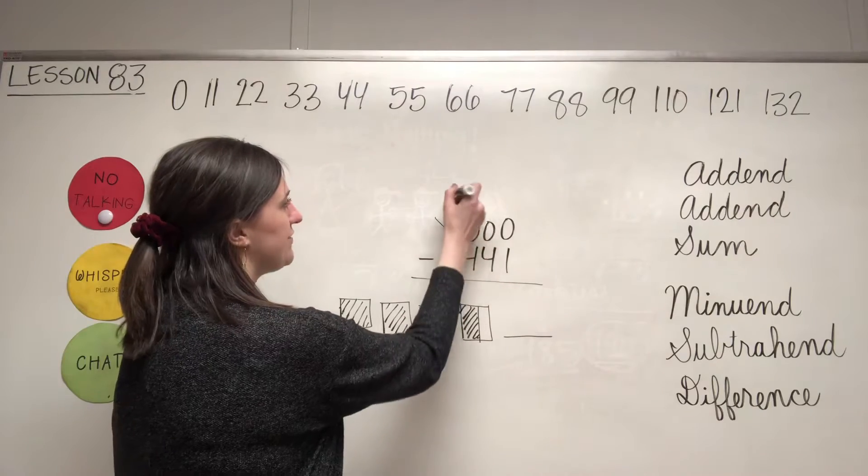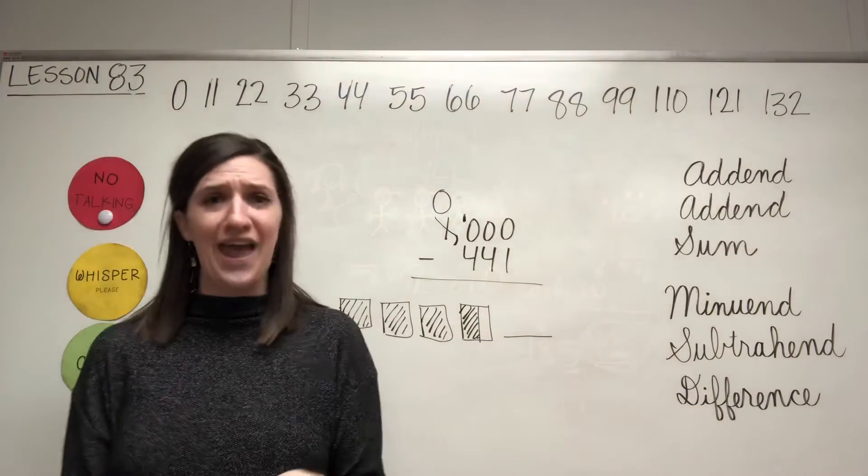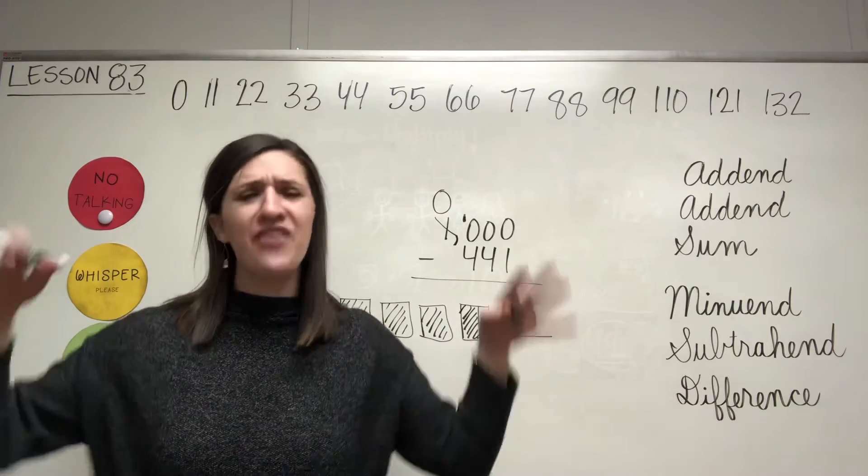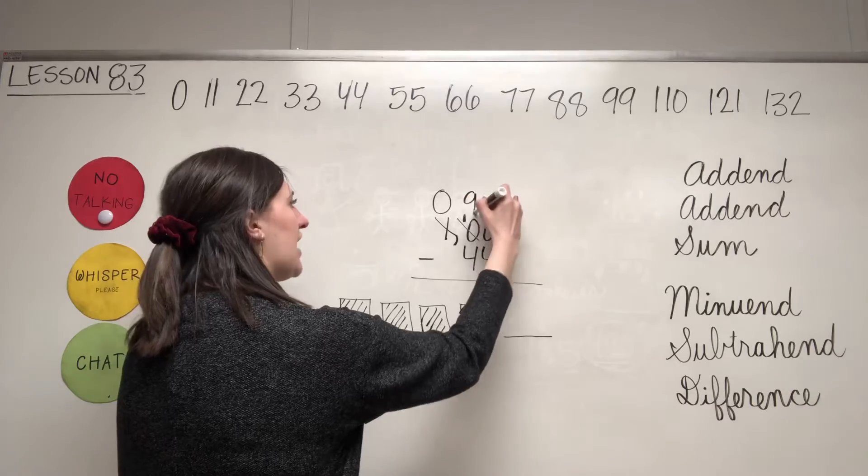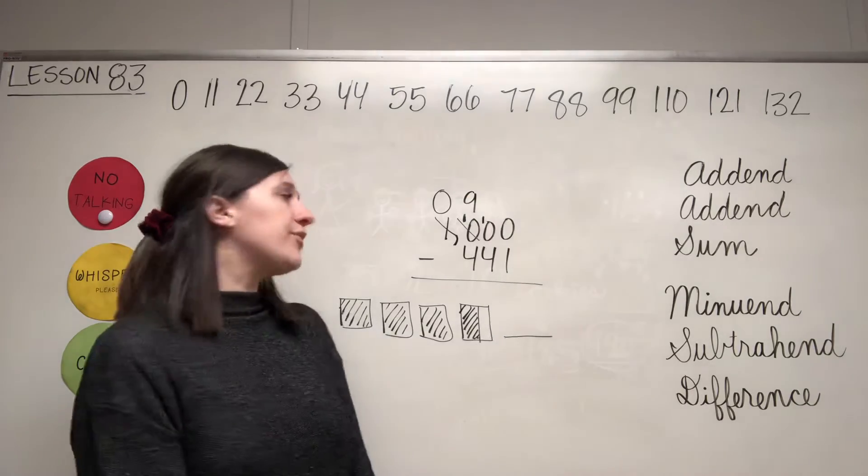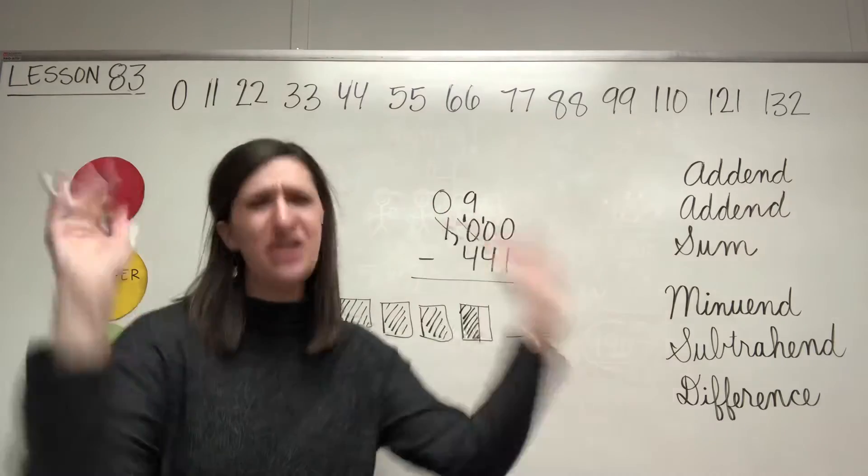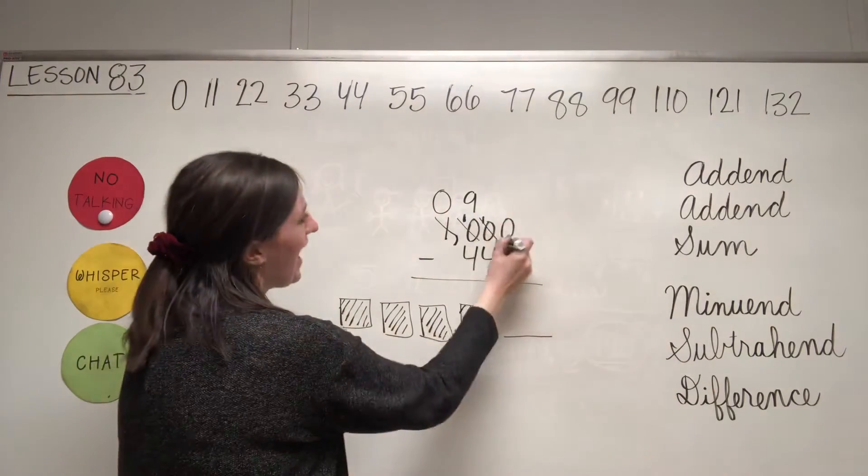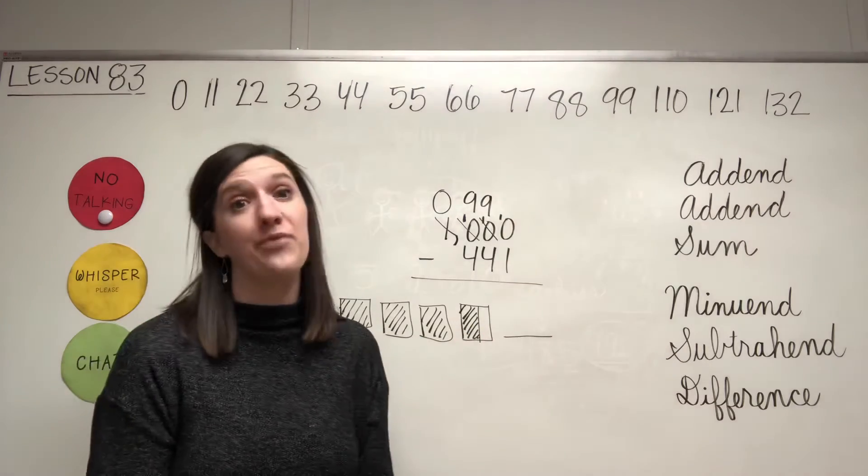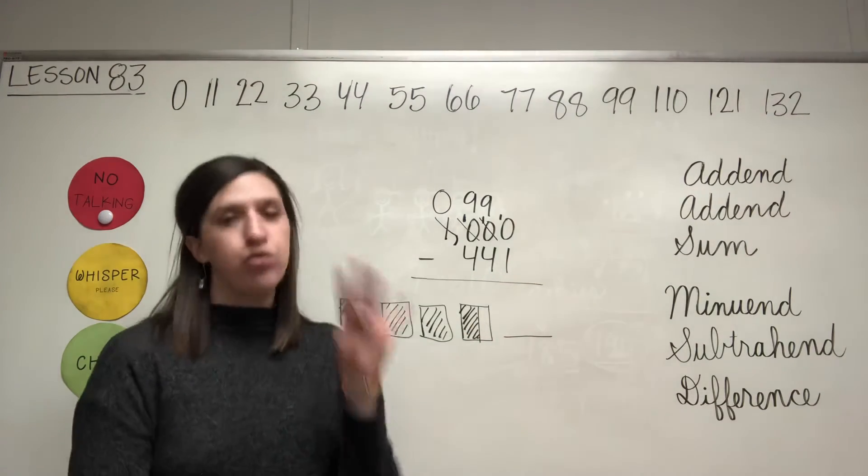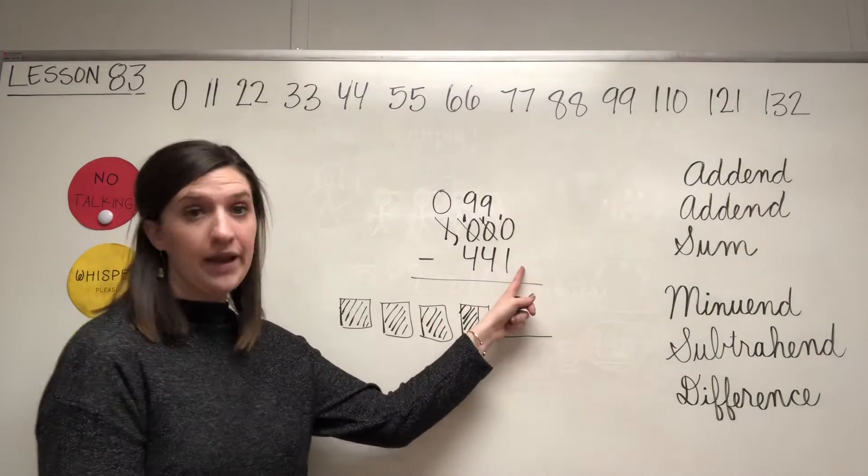Cross off the one, leave it as a zero, put a one in front of the zero so that it becomes 10. But does that help us? No. Cross off the 10, leave it as a nine, put a one in front of the zero so that it becomes 10. But does that help us? No. Cross off the 10, leave it as a nine, put a one in front of the zero so that it becomes 10. We can now finally subtract 10 minus one, nine.